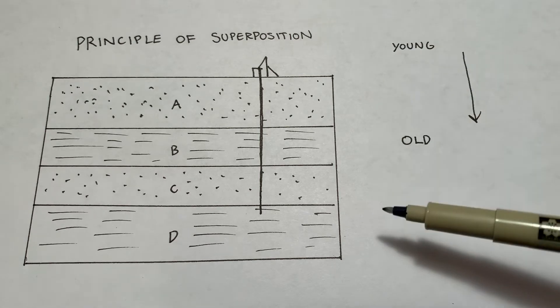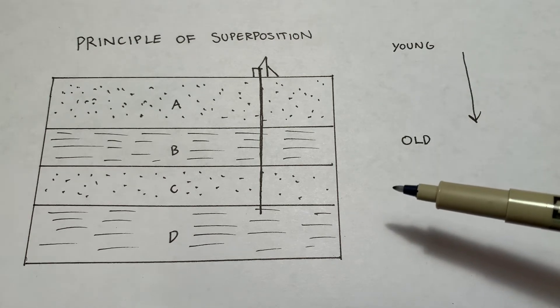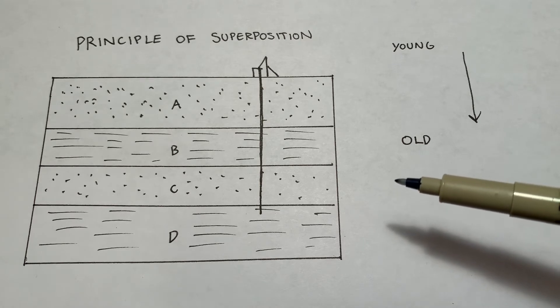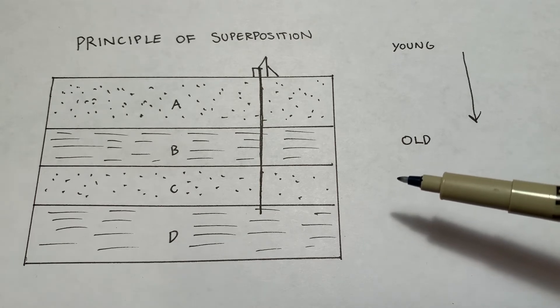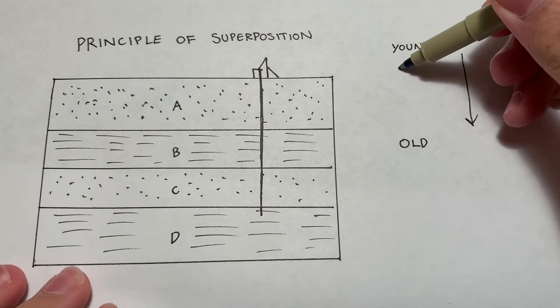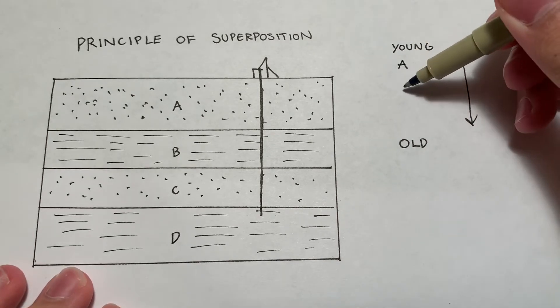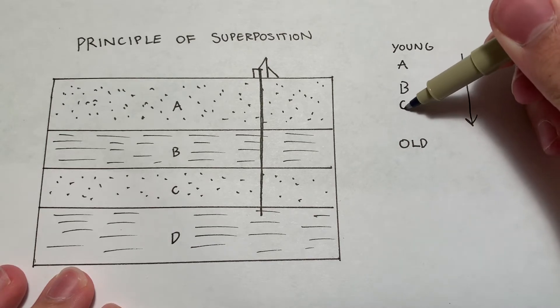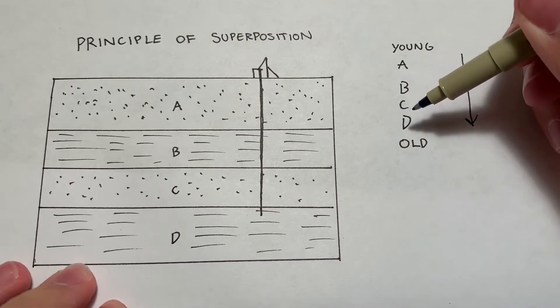So if we were to do this really simple picture here, now if you're ever going to be mapping something, don't expect, unless it's a very small section of the earth, don't expect it to look quite like this, but the youngest then of course is going to be A, followed by B directly beneath it, followed by C, and finally D at the bottom there is the oldest.